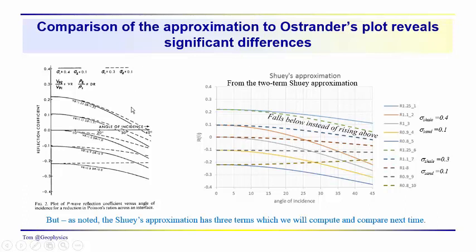Over here we've got for the 0.4 and 0.1 value. With these velocity and density ratios, we actually have the 1.25 value for the 0.4 and 0.1 coming in above the value for this ratio, 1.25, with Poisson's ratios of 0.3 and 0.1.